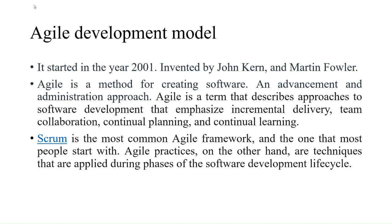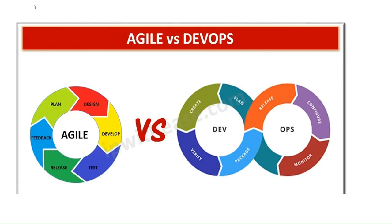Agile practices and techniques are applied during phases of the Software Development Life Cycle. In the SDLC, we have many phases, and Agile Development Model fits here as well. Comparing the architectures of DevOps and Agile — they look similar, but in DevOps we divide phases into development and operational phases, whereas in Agile we do not divide like that. Agile is a life cycle process.